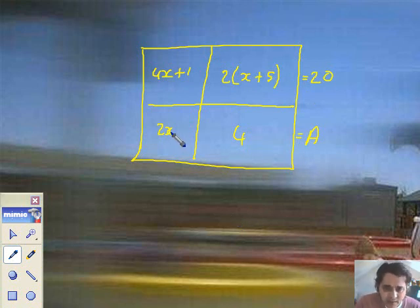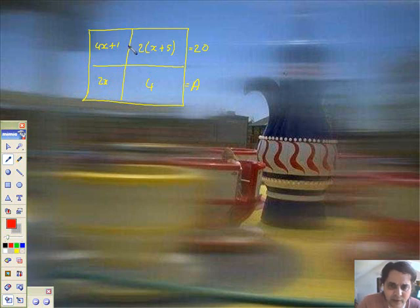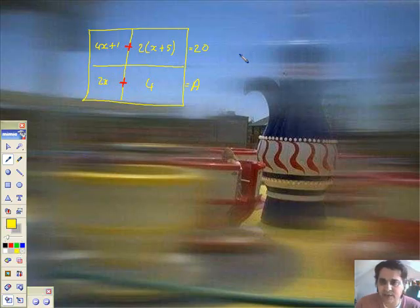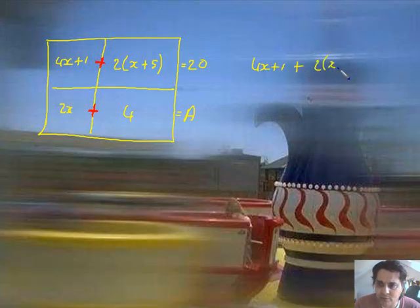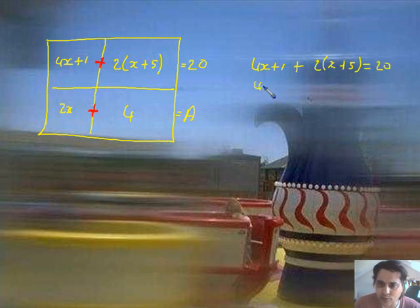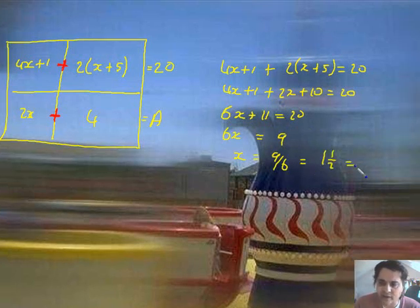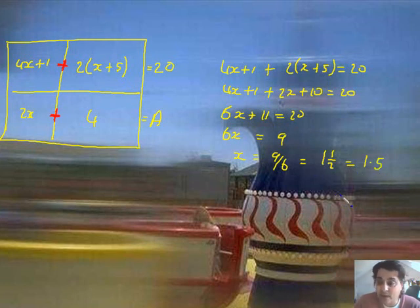Well, I can't find the value of A because I don't know what x is yet. So I've got to use this to form an equation, solve it, get the x, come back, put the x in there and get the A. So essentially, I've got that. So here I go. 4x plus 1, add on 2 bracket x plus 5 will come to 20. Bust it all open a little bit. That's 2x plus 10 equals 20. Simplifying on the left hand side, we've got 6x plus 11. 1 plus 10 is 11, equals 20. Subtract the 11. 6x equals 9. Divide by 6, 9 over 6 is going to be 1.5. There's no units here, but anyway, x is 1.5.